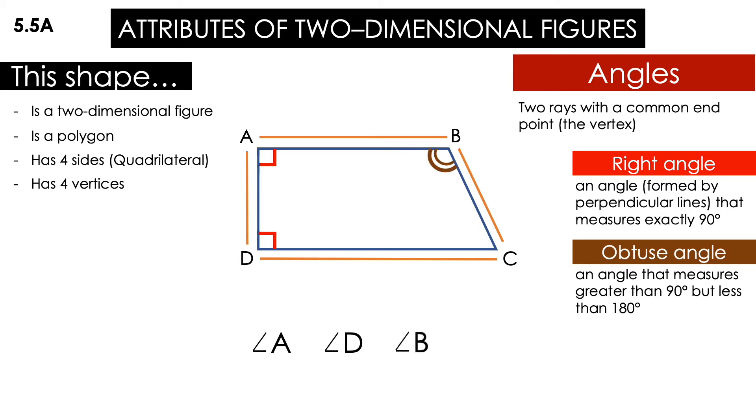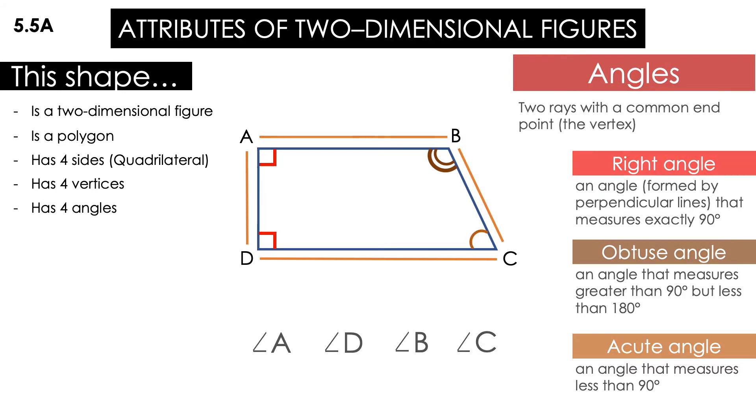Yes, angle B. And the last one is an acute angle. It's an angle that measures less than 90 degrees. Which one would that be? Yes, angle C. With that being said, yes, this shape has four angles.